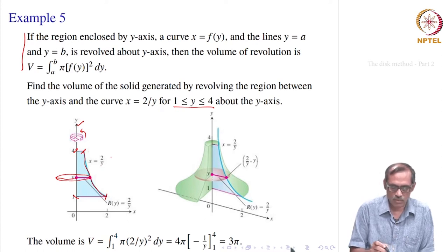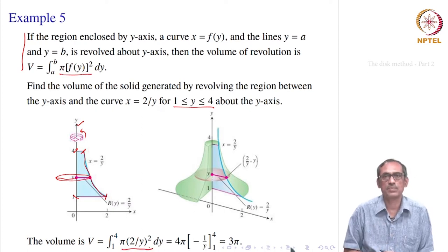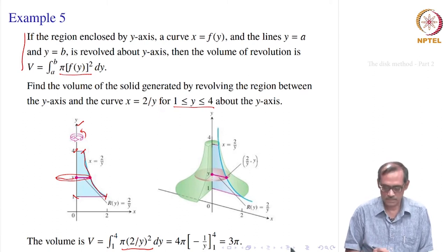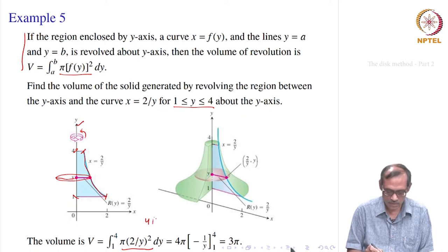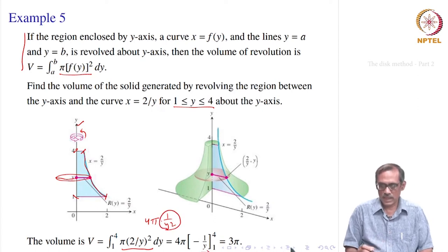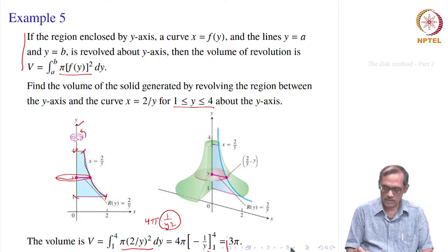Here x is a function of y, so it is π times f(y) squared, which is π times (2/y) squared. Volume is simply the integral from 1 to 4 of π times (2/y)² dy, which equals 4π divided by y squared. The integral of 1/y² is minus 1/y, so it is 4π times [−1/y] evaluated from 1 to 4. Simplifying gives the answer as 3π.